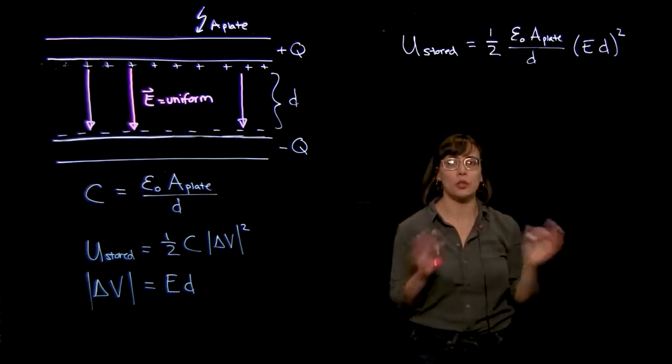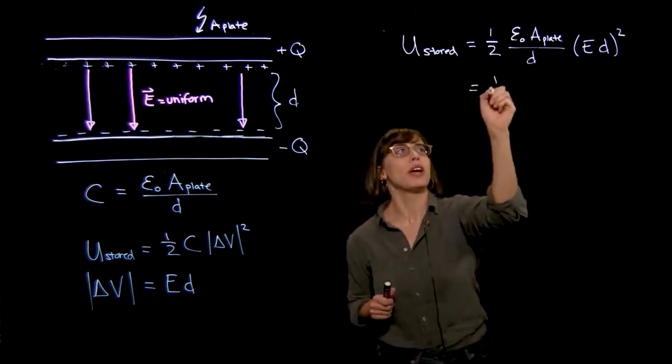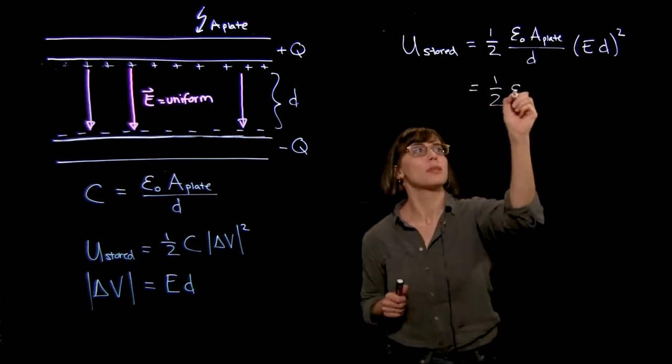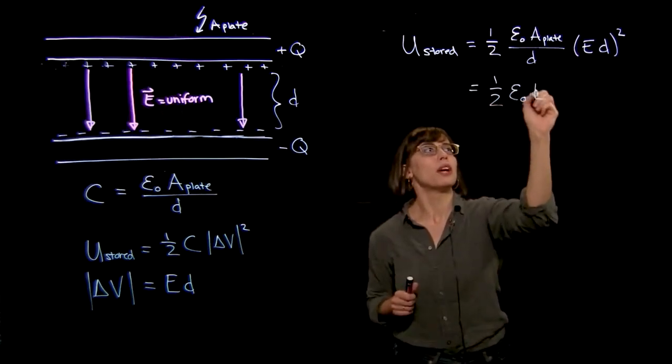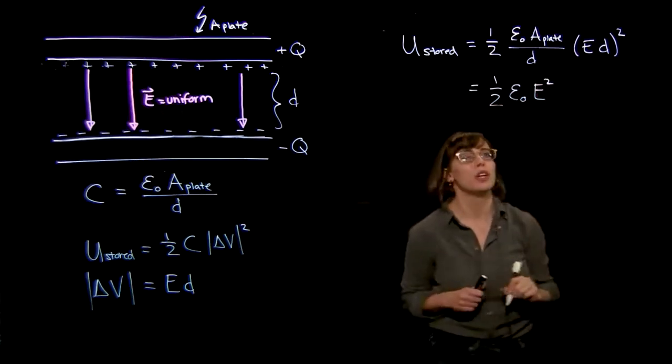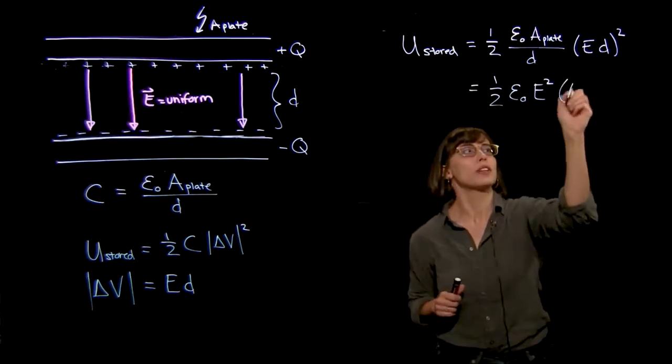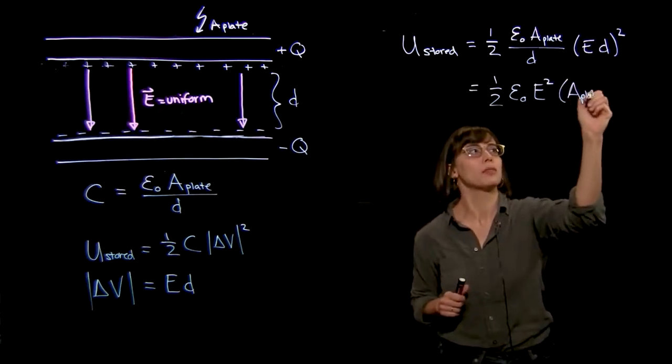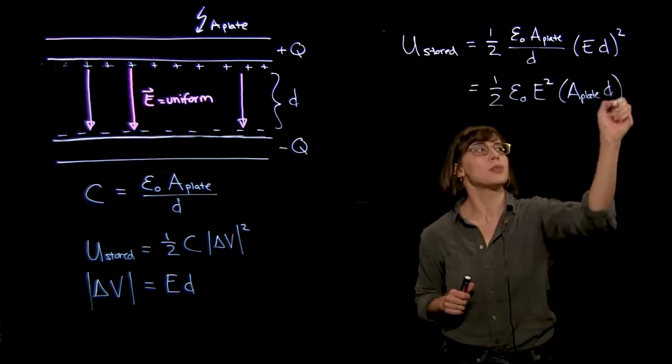Now all I'm going to do is rearrange this a little bit. Let me pull out a one-half, I'll pull out the epsilon zero, and I'll pull out the e squared. And you see then what I get left with is just the area of the plate times the distance between the two plates.